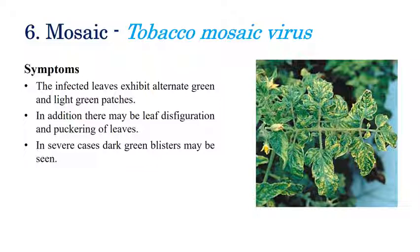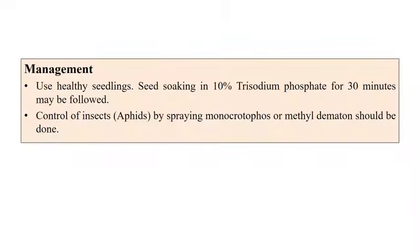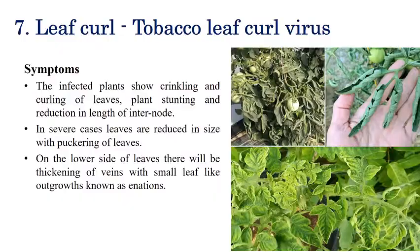The next disease is mosaic, caused by Tobacco Mosaic Virus (TMV). Yellow-green mosaic patterns or alternate green and yellow patches are the most diagnostic symptoms, along with leaf discoloration and puckering of leaves. For management, use healthy seedlings and treat seeds by soaking in 10% trisodium phosphate for 30 minutes. Control insect vectors by spraying monocrotophos or methyl demeton.